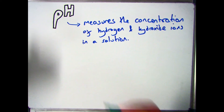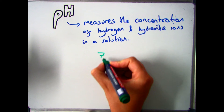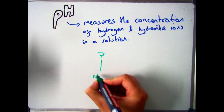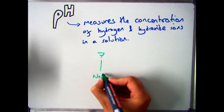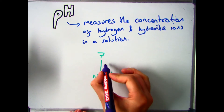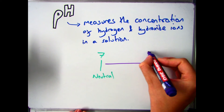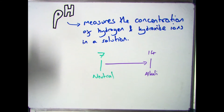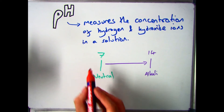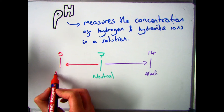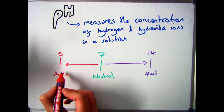If we have a look at the pH scale that you'll be familiar with from Key Stage 3, we've got a pH of 7 which is neutral. If we go above that, between 7 and 14, we get an alkali, and if we go below, from 7 down to 0, anything below 7 is an acid.